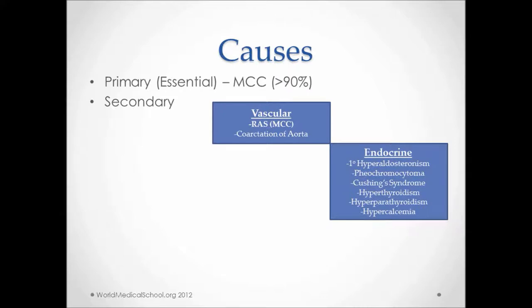Hyperthyroidism, in which you have a decreased TSH and an increased T4, presents with hyperfunctioning of all body systems like nervousness, irritability, sweating, heart racing, hand tremors, and anxiety — in other words, sympathetic symptoms. Hyperparathyroidism may be due to a parathyroid adenoma, part of the MEN 1 and 2 syndromes. And hypercalcemia, whose main cause is primary hyperparathyroidism.